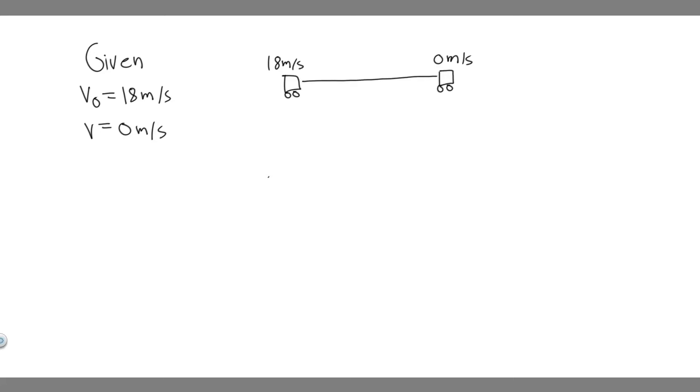In this problem, we're told when you see a traffic light turn red, you apply the brakes until you come to a stop. If your initial speed was 18 meters per second and you were heading due west, what was your average velocity during braking? Assume constant deceleration.